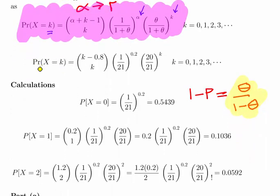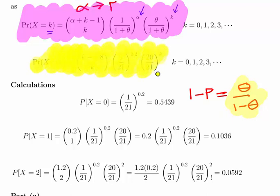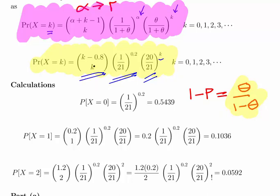When we put in our values here, this is what we get. Theta is 20. So 1 over 1 plus theta is 1 over 21. Alpha is 0.2. So this is going to stay fairly consistent the whole way through. Theta divided by 1 plus theta is 20 divided by 21. Here, we have the power of K. And, over here, we have the binomial coefficient of K minus 0.8 choose K.